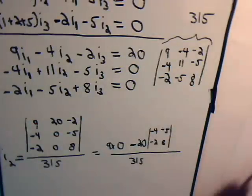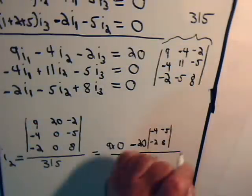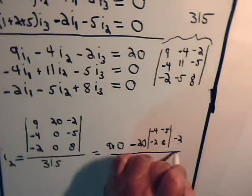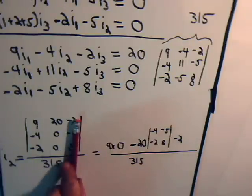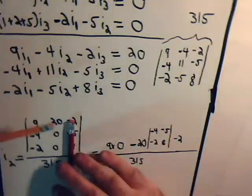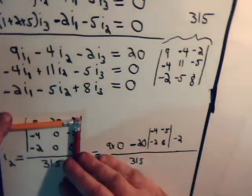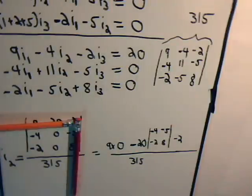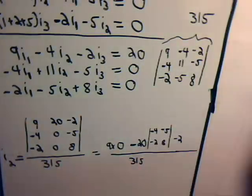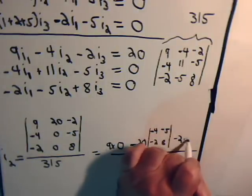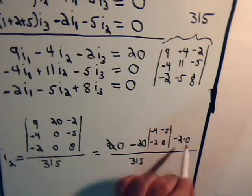And minus 2 times this 2x2 determinant. Cover up the sub-determinant, cover up the column, cover up the row. And again, we have these two zeros, so we have 0 minus 0. So this is minus 2 times 0. So this is 0, this is 0.